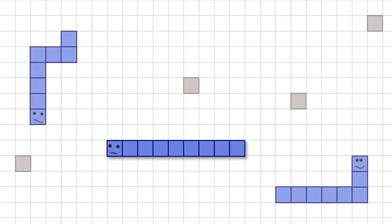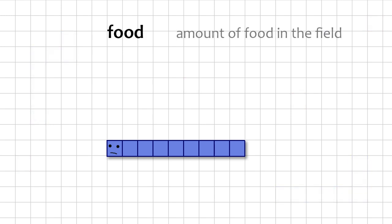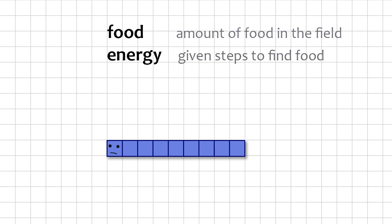For natural selection, I will release the snakes in the field with food and let them breed. I will only control their number using two parameters: Food — the amount of food in the field; and Energy — how many steps the energy will last. If the snake hasn't found food for a given number of steps, its length is reduced by one segment, and it's again given the number of steps by the energy parameter.